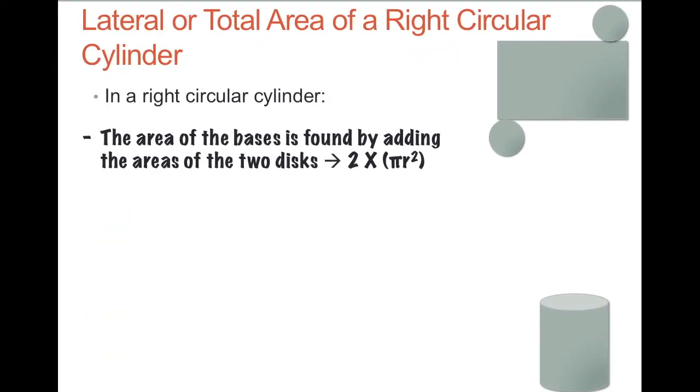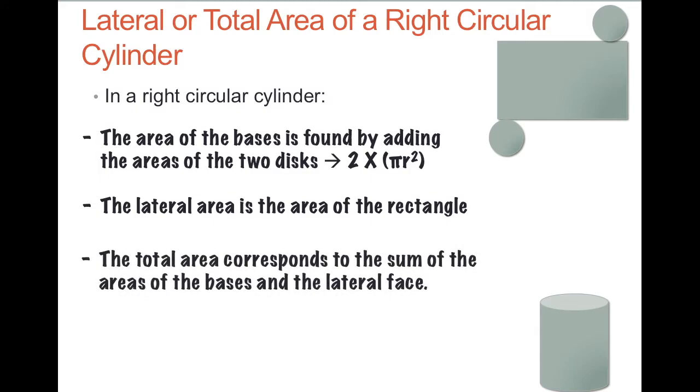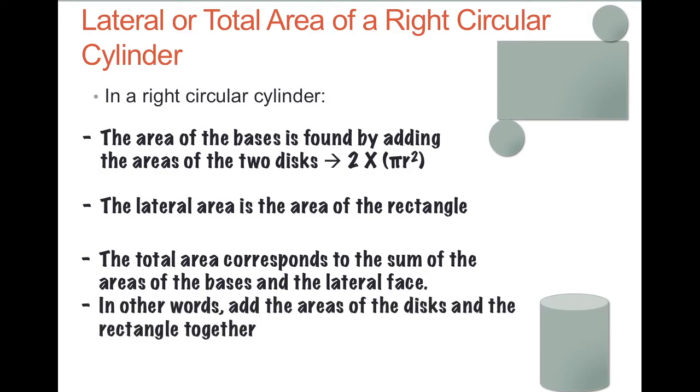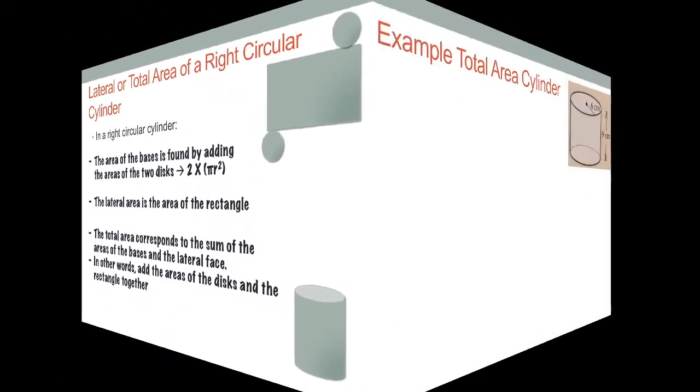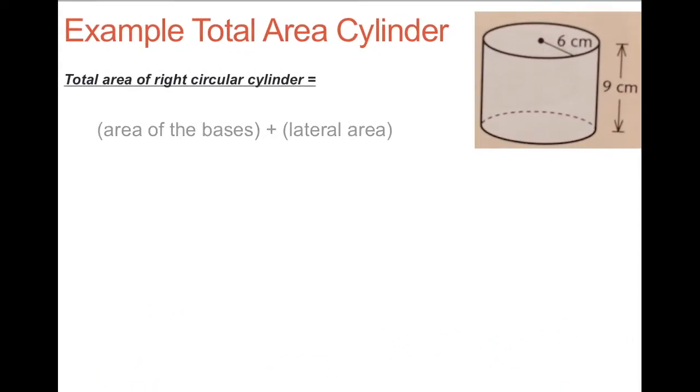The area of the bases is pi r squared, but there's two of them, so we have 2 pi r squared. The lateral area is the area of the rectangle. The total area corresponds to the sum of the area of the bases and the lateral face. In other words, you'd have to add the areas of the discs and the rectangle together.